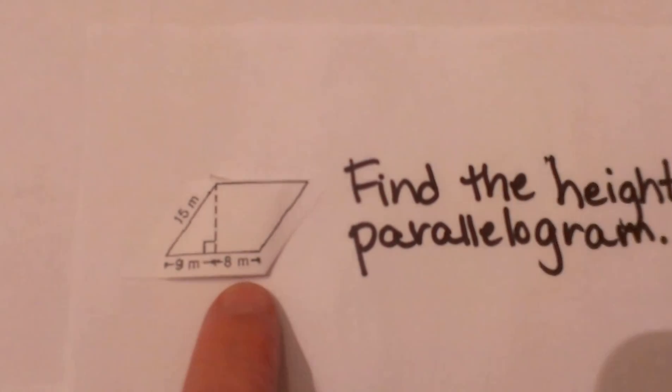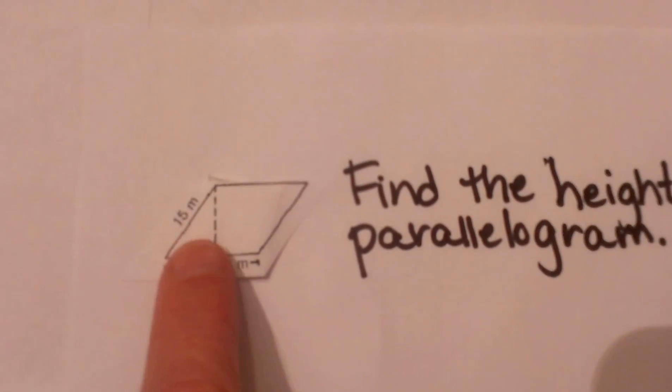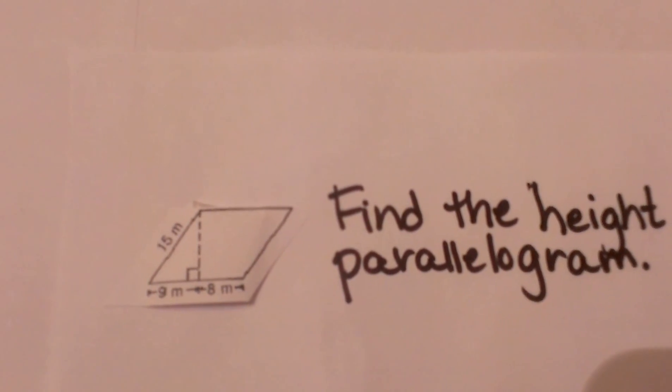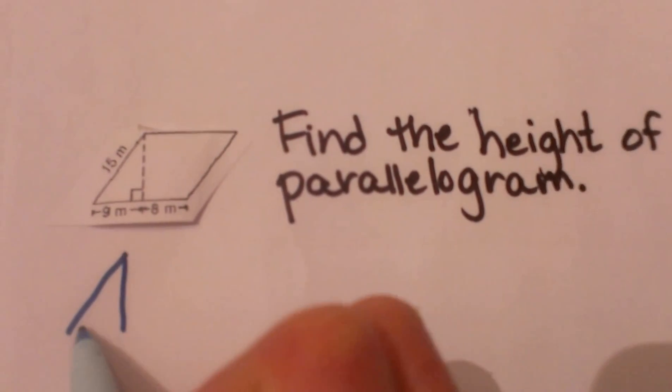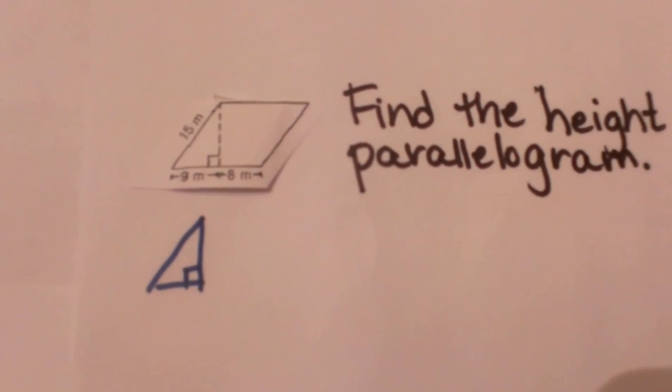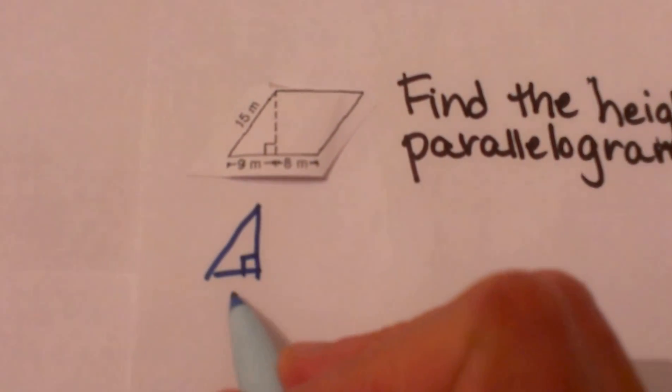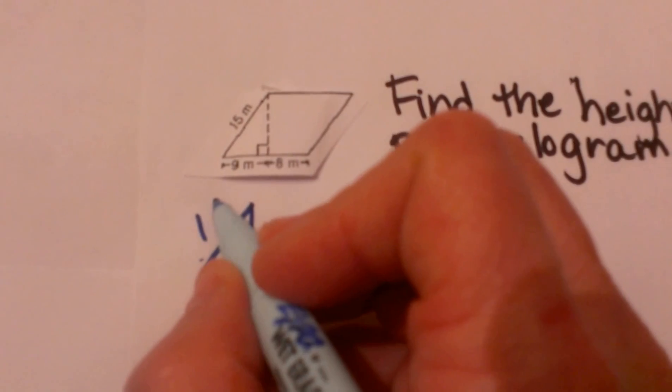So what we are going to do is actually focus on the triangle and not the parallelogram. Let's look at this triangle and I'm going to draw it out here. Here is our right triangle. We know that our base is 9 and this side is 15.